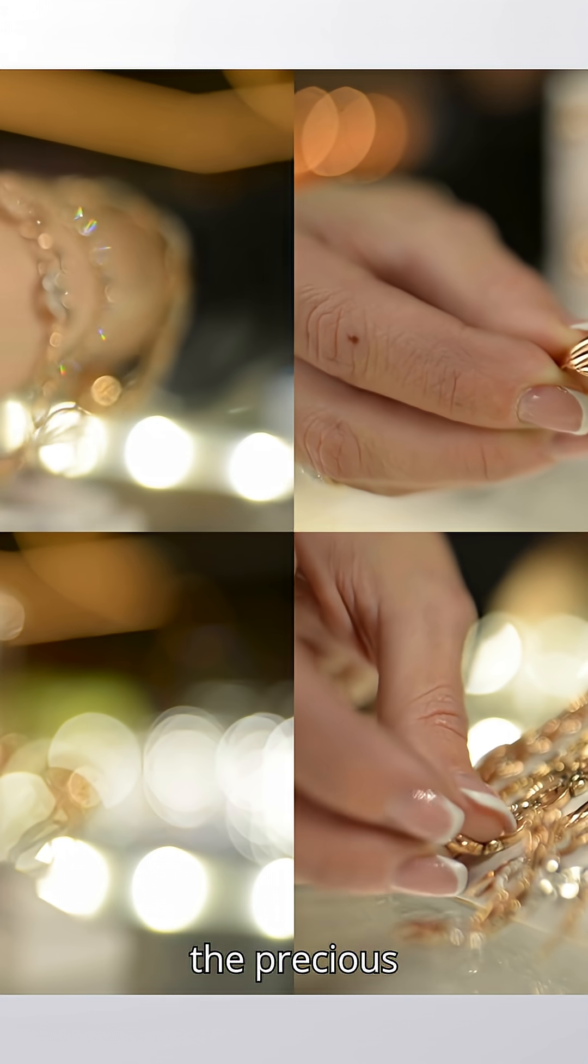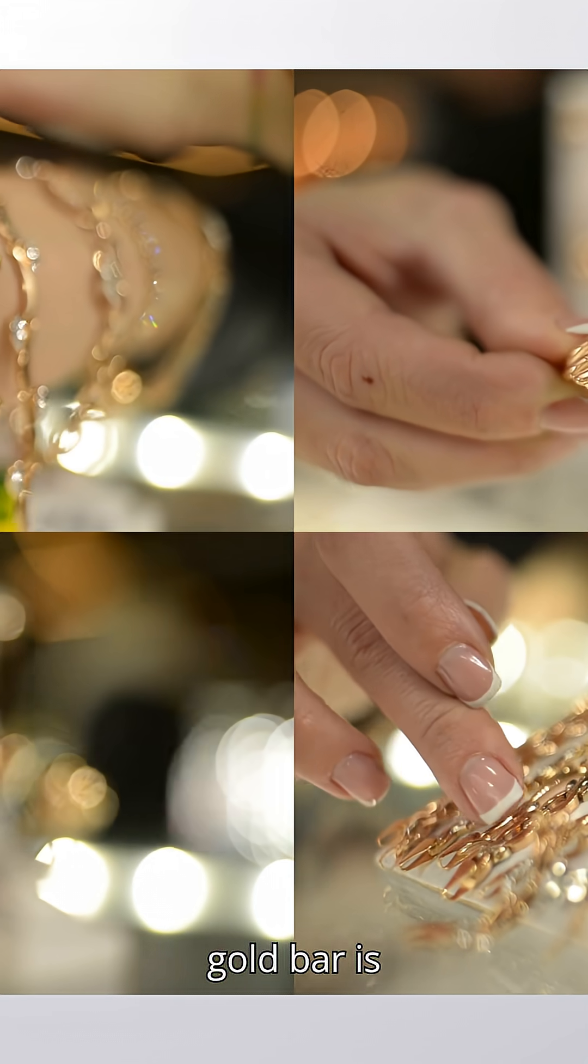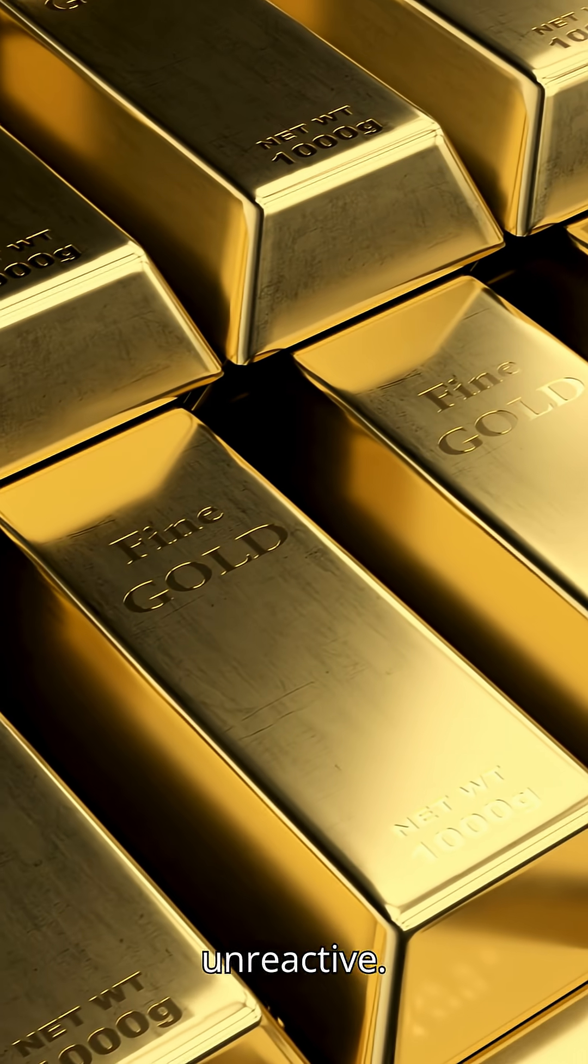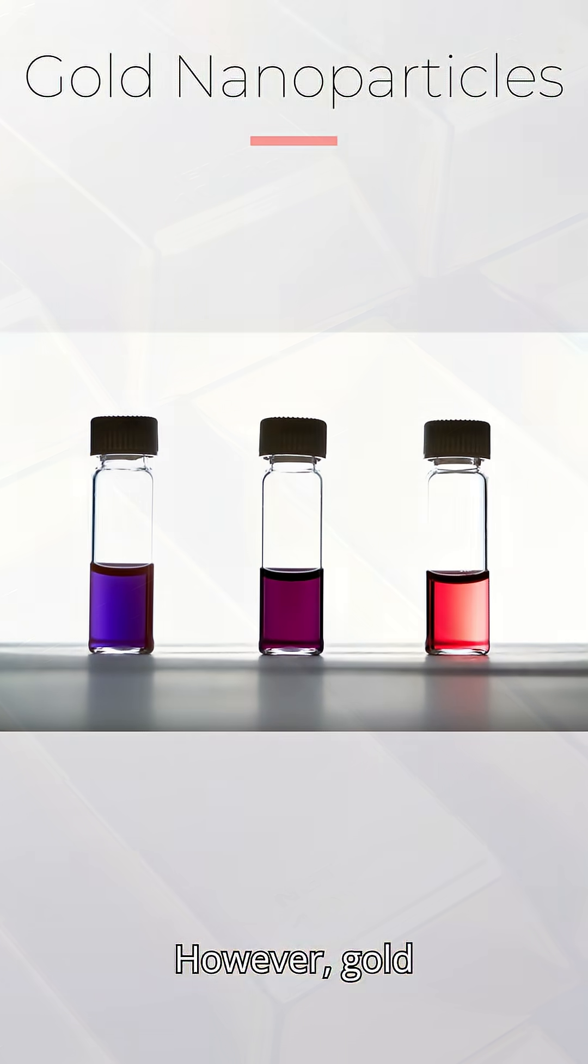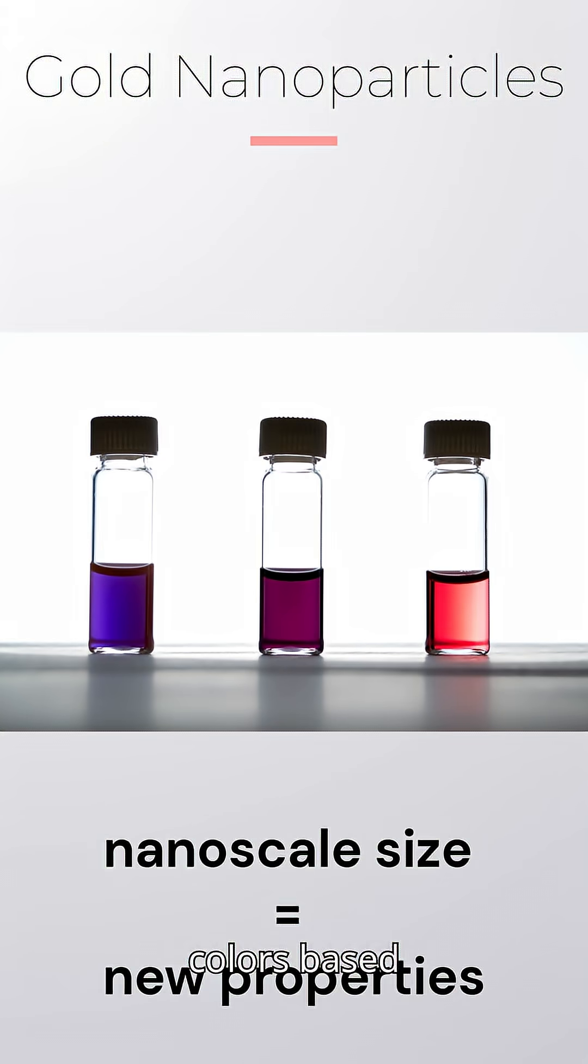Take for example the precious metal gold. A gold bar is shiny, yellow and unreactive. However, gold nanoparticles are much more reactive and have different colors based on their size.